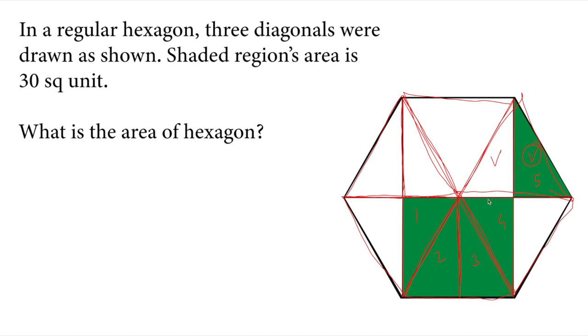So if I have five same size triangles, I can call them five of the triangle's area. Area of the small triangle is equivalent to 30, I know. So the shaded region is equivalent to 30. That means five of the A. So each one of them is A.